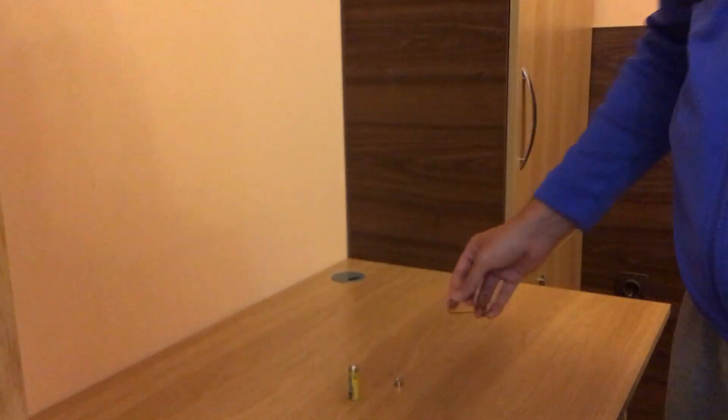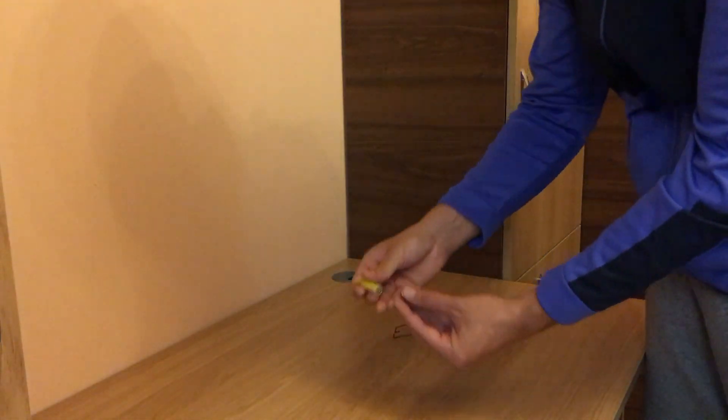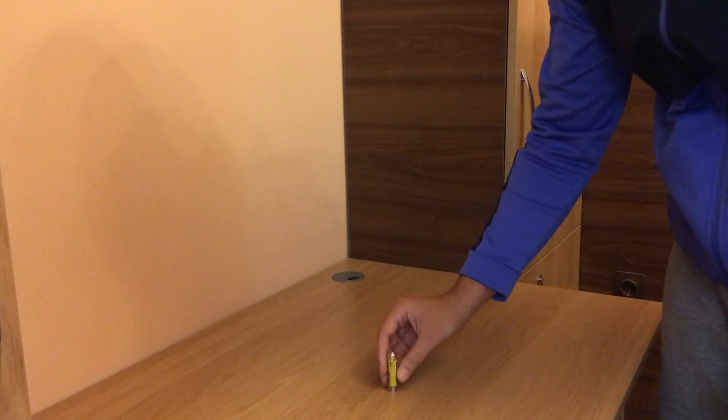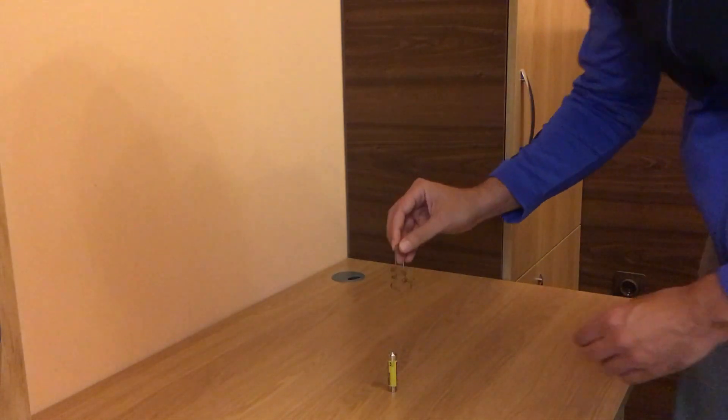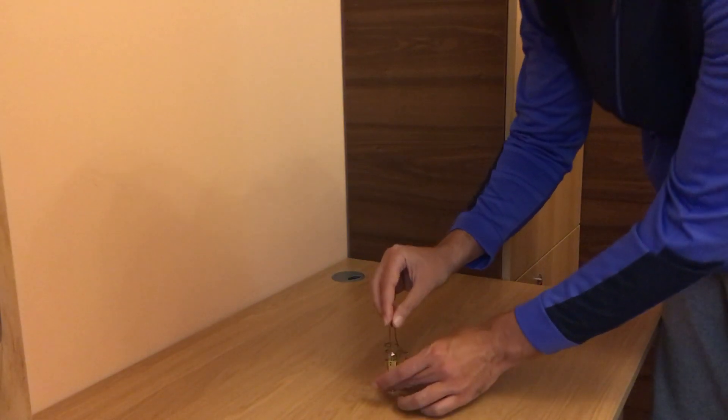So I'll put the battery on the negative charge and try to balance the twisted copper wire on the positive charge.